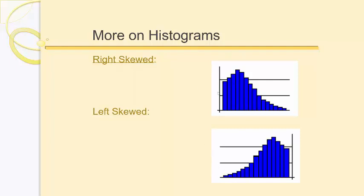An example of something that might be right skewed: if you drew a histogram for the number of hours of television people watch per day, with hours on the x-axis and frequency on the y-axis, you'd see that most people watch maybe between one and four hours of TV a day, and then there are some super TV watchers who watch eight, nine, ten, eleven hours a day, but there are not as many of them.